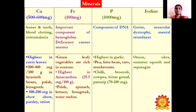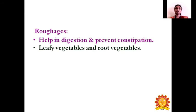Phosphorus is an important component of DNA. It is highest in garlic and also rich in peas, lima beans, taro, and mushrooms. Chilies, broccoli, bitter gourd, and parsley contain about 70 to 100 mg of phosphorus. Deficiency of iodine leads to goiter, muscular dystrophy, and mental retardation. Iodine is rich in onion, okra, some squash, and asparagus. Roughage helps in digestion and prevents constipation, and is rich in leafy vegetables and fruit vegetables.